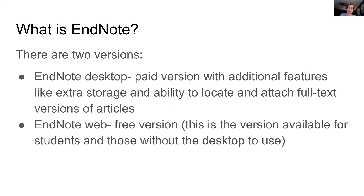There are two versions of EndNote. Today we'll be talking about the second one, but the first is EndNote desktop — they're on EndNote 21 now. It's paid software you download onto your computer, and it has additional features like extra storage and the ability to find and attach full-text articles to your citations. The free version doesn't have quite as many capabilities, but it works for the basics and is pretty good for a free version.